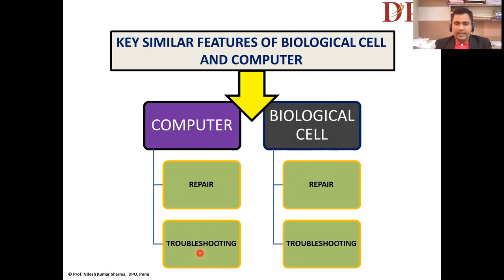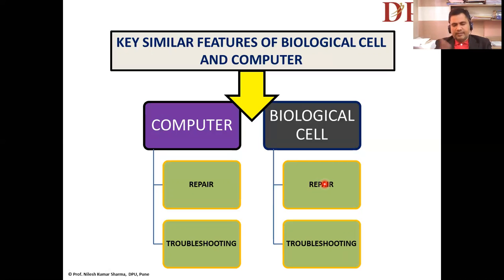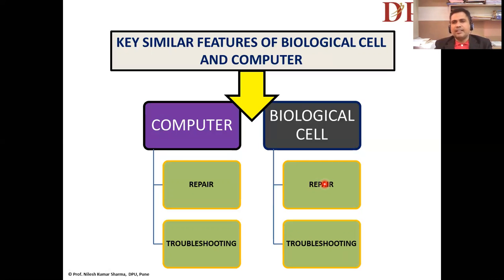Computers have the power to repair themselves or with the help of external sources, and troubleshooting is also a feature of computer systems. Our biological cell is nothing less — cells have their own repair and troubleshooting system. For example, when our skin cells are exposed to UV radiation and damage occurs, the cell has its own inbuilt sensing mechanism where repair or troubleshooting is carried out as long as the cells remain functional.